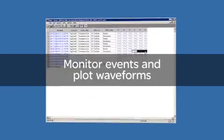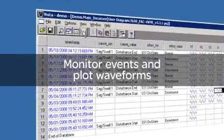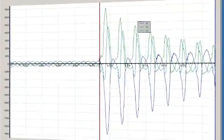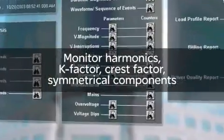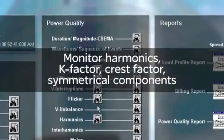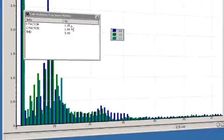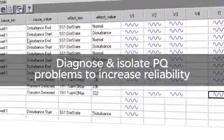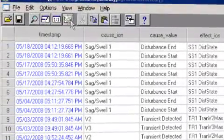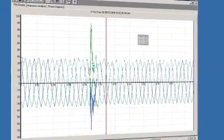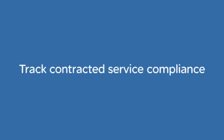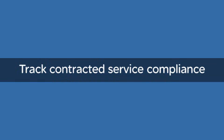Ion Enterprise Power Quality Analysis allows you to monitor events and plot waveforms for analysis. You can monitor harmonics, k-factor, crest factor, and symmetrical components. You can diagnose and isolate power quality problems to increase the reliability of your network, benchmark performance and compare service areas, and track contracted service compliance.